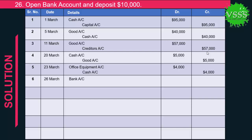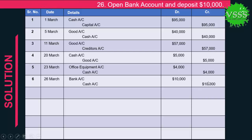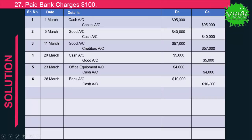Transaction 6 (26th March): Opened a bank account and deposited $10,000. Bank account is debited by $10,000 and cash account is credited by $10,000. Transaction 7: Paid bank charges $100. Bank charges account is debited by $100 and cash account is credited by $100.